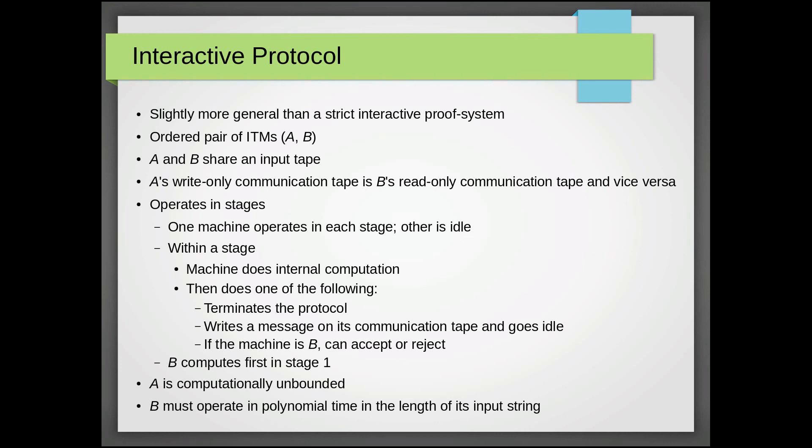And within a stage, one machine does its internal computation, doing whatever it wants to compute before it decides what to do next. And what it can decide to do is one of the three following things. The first thing it can do is just terminate the protocol and decide not to perform any more computation and not write anything on its communication tape.